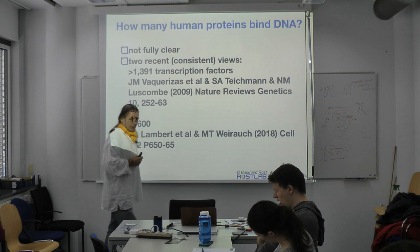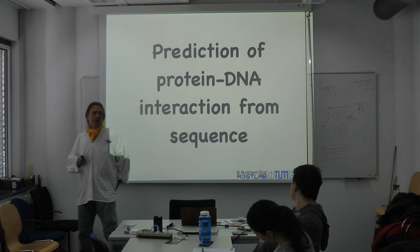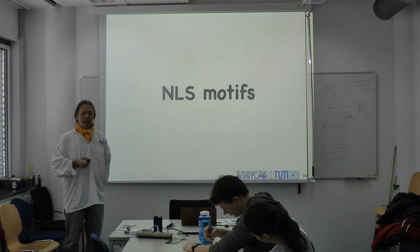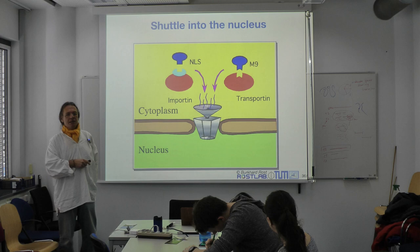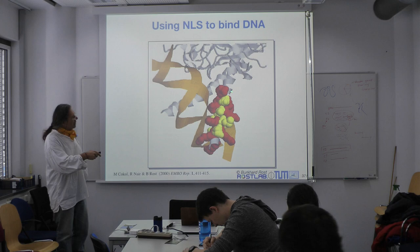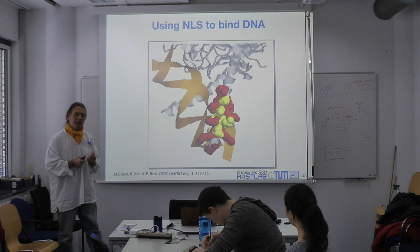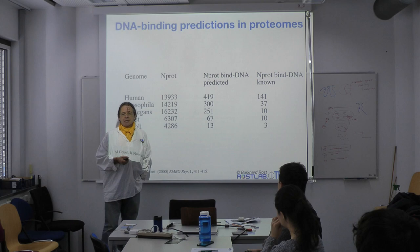We still don't quite know how many proteins actually bind DNA or RNA, but we can predict it from motifs. One simple way is the nuclear localization signal — the signal recognized to import proteins into the nucleus, where most proteins bind DNA. They bind DNA with the same signal. Here is an example of a nuclear localization signal and a DNA binding site — the nuclear localization signal is exactly the site that binds the DNA. It's a very clever mechanism. This is one way to define DNA binding sites by looking at the subset of nuclear localization signals that bind DNA.